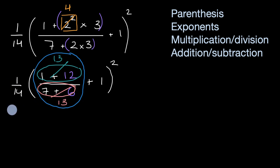So I can rewrite this as one over 14 times one plus one, all of that squared. And now we'll want to do this parentheses. So let's do that. One plus one is going to be equal, of course, to two.